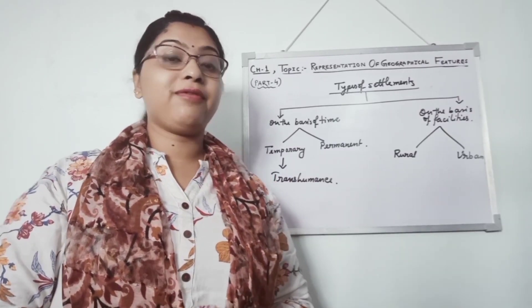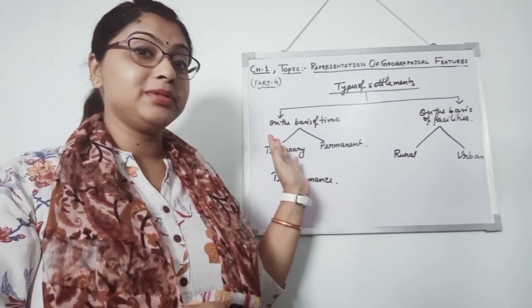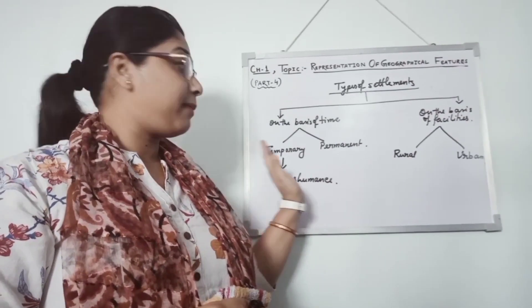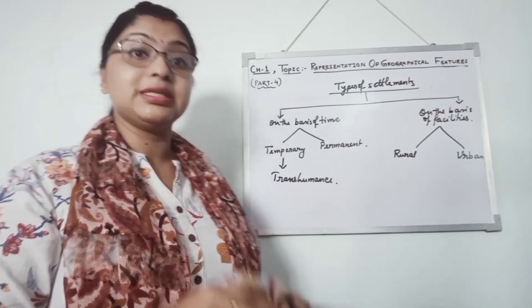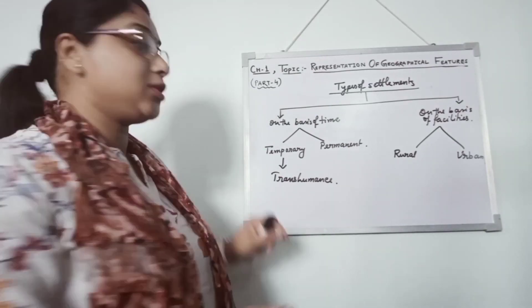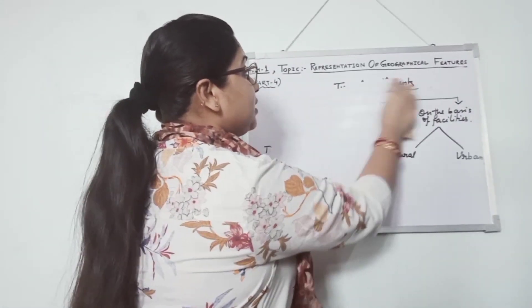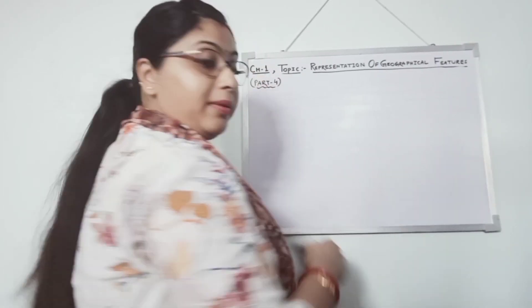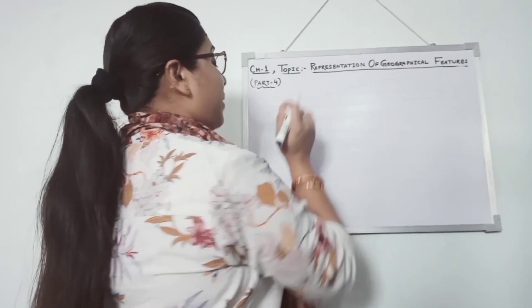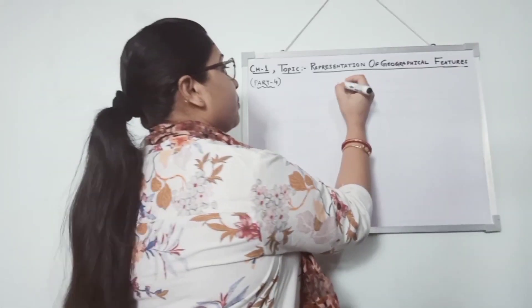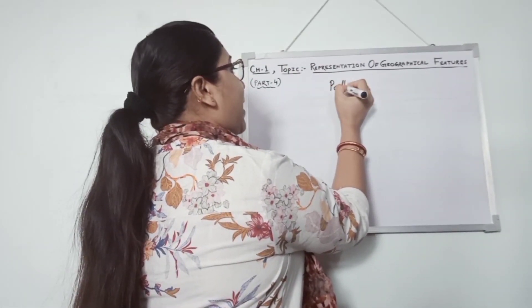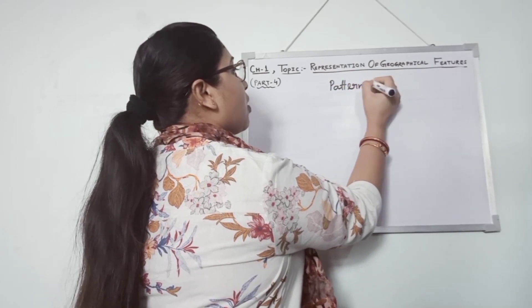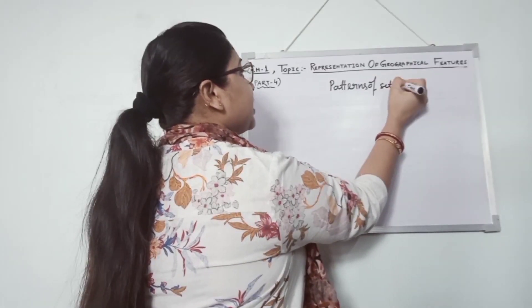So students, I have also given the examples and also said about different types of settlements. Now you have to know the patterns of settlements. Patterns means designs. How people are forming that different patterns, designs we will get or different patterns of settlements we will get to know. Patterns of settlements.